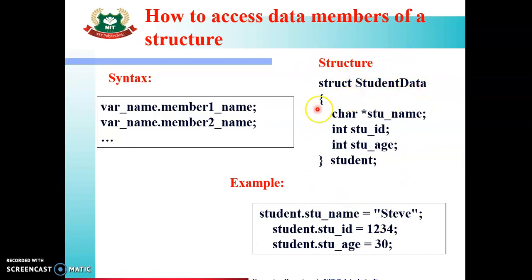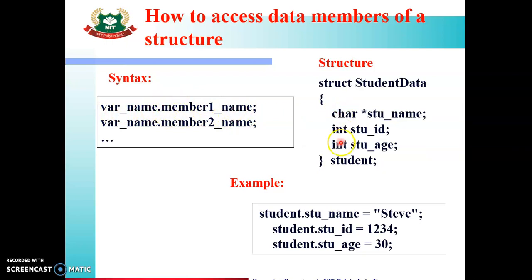To access data members of a structure, we will take the student_data structure used in the last video. It has struct student_data with members: character student_name, student_id, and integer student_age. The variable is student. To access data members, the syntax is: variable name dot member name. For each member, we write: variable_name.member1, variable_name.member2, and so on — one statement per member.